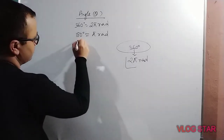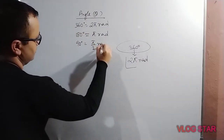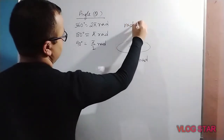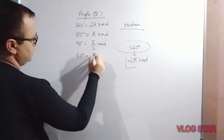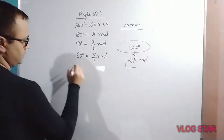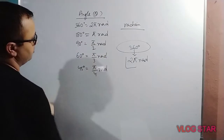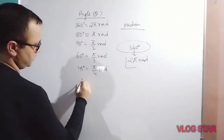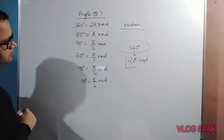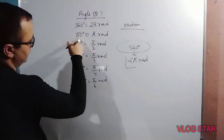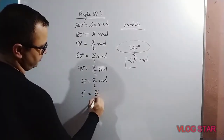So pi radians equals 180 degrees. Dividing further: 90 degrees equals pi by 2 radians, 60 degrees equals pi by 3 radians, 45 degrees equals pi by 4 radians, and 30 degrees equals pi by 6 radians. Dividing by 180, 1 degree equals pi by 180 radians.